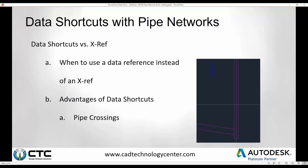Hopefully you have an understanding of how data shortcutting and data referencing works coming into this. I won't be going over a particular amount of explanation of exactly what those are. We'll primarily be going over the advantage and the best practices of how to set it up when it comes to doing the data shortcuts with pipe network drawings. I'll be going over one example here, hopefully fairly universal for all of you to apply to whatever company and whatever settings you might have.